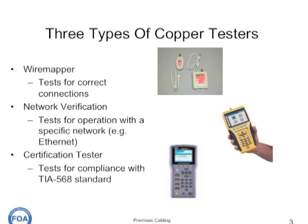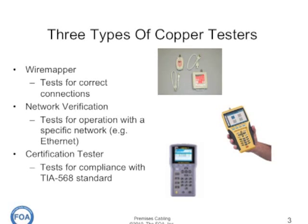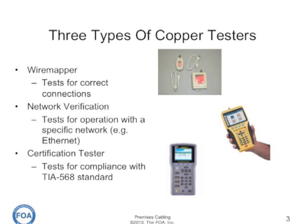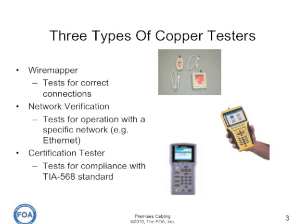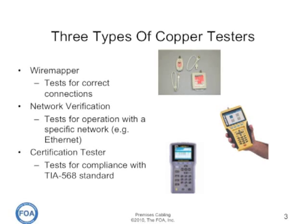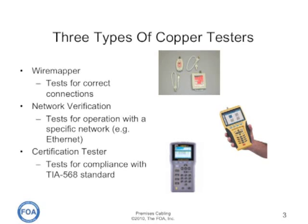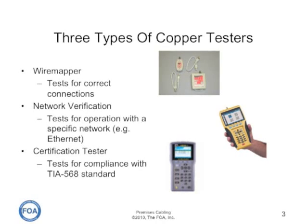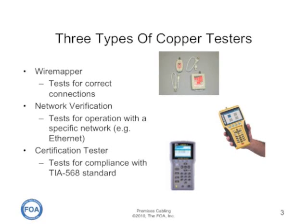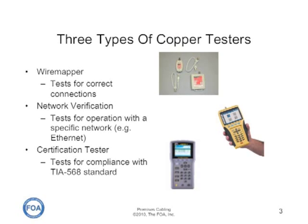There are three basic types of copper testers used on UTP cables and premises cabling. A wire mapper tests for correct connections, something that every installer should do as soon as they finish making a connection. There are network verifiers, a newer type of tool that tests for operation with a specific network, for example Ethernet. These testers will also usually do wire mapping in addition to network testing. Then there's a certification tester, which tests for compliance with standards like TIA 568 or ISO IEC 11801. These are the testers that most people think of when they think of testing UTP cabling.